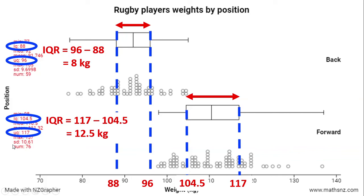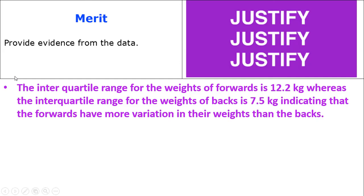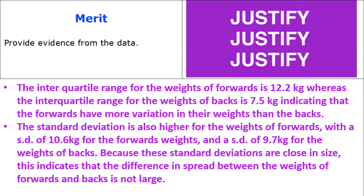If I look at the standard deviations, the standard deviation for the forwards is 10.6 and the standard deviation for the backs is 9.7. They're actually reasonably close together — 9.7 and 10.6 — but the standard deviation of the forwards is again a little higher than that of the backs. Our interquartile range for the weights of forwards is 12.5 kilos while the interquartile range for backs is 8 kilos, and the standard deviations of 10.6 and 9.7 being close in size indicates that the difference in spread is not large.